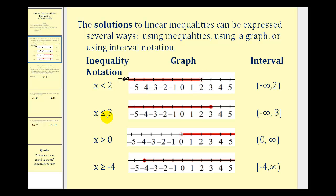For x is less than or equal to positive three, we have a closed point on three, and then we use a square bracket on three to show that value is included in the interval. For x greater than zero, open point on zero, arrow to the right, and interval notation is from zero to infinity, both with rounded parentheses.